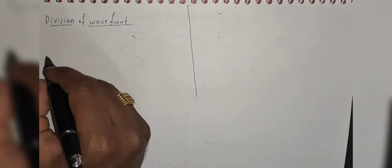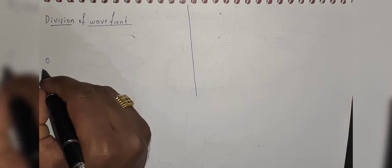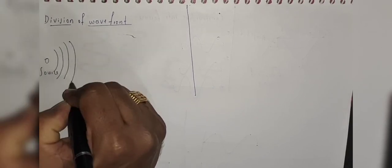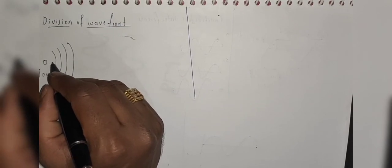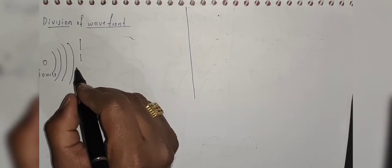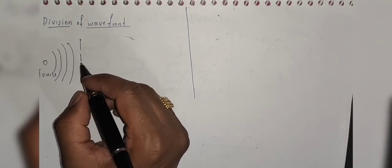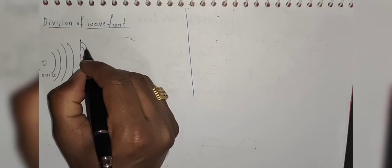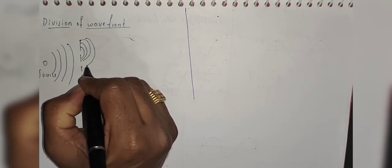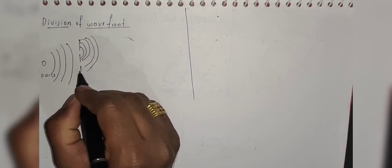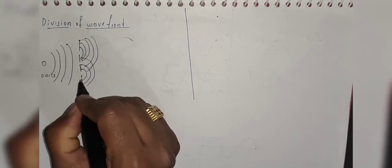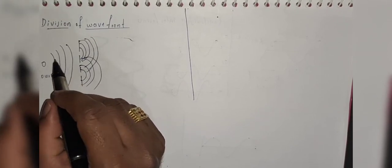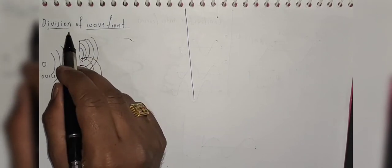Here we are going to consider a source — from this source it emits waves, and in front of this source we are going to keep two slits. From these two slits, the wave is going to divide into a first one and a second one. In this way we divide the first wave into two waves — this is the division of wavefront.